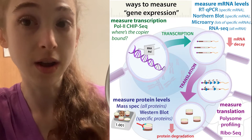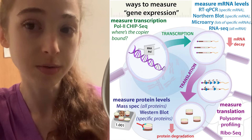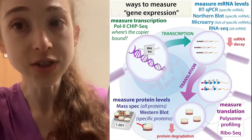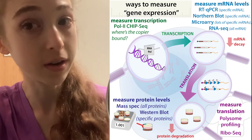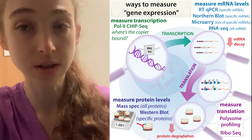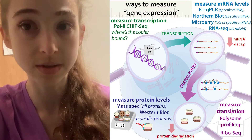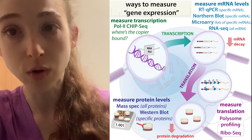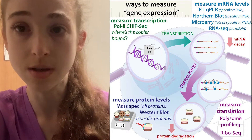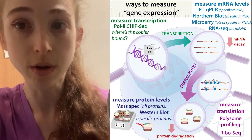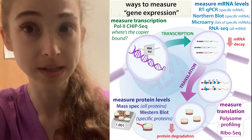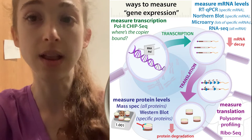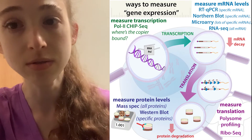When we're talking about transcription, we're talking about the level of making the messenger RNA copies. In the case of proteins, there's often a very good correlation between the amounts of messenger RNA and the amounts of the protein — if you make a bunch of copies of the messenger RNA, there are more opportunities for the ribosomes to make the protein. So you see more messenger RNA, more protein. But you can also have regulation at the level of the messenger RNA and of the protein that can influence the exact correlation.